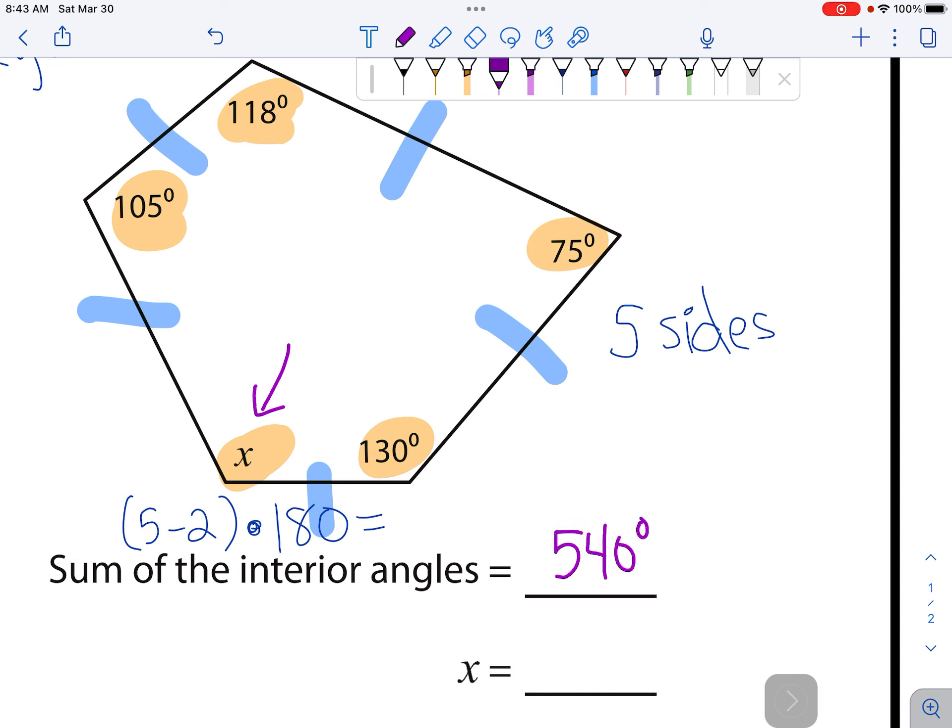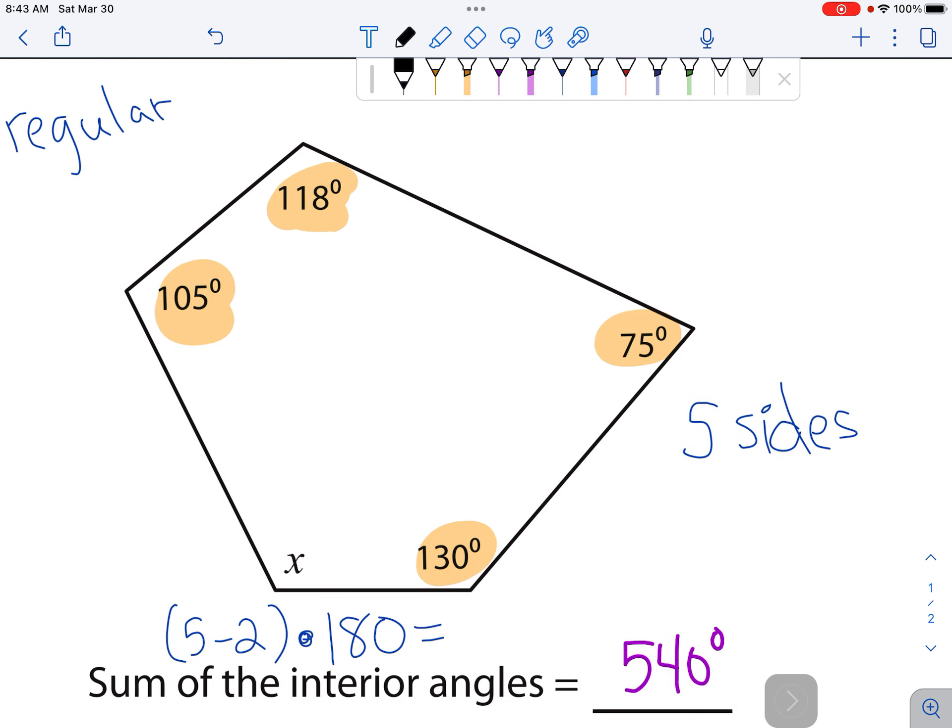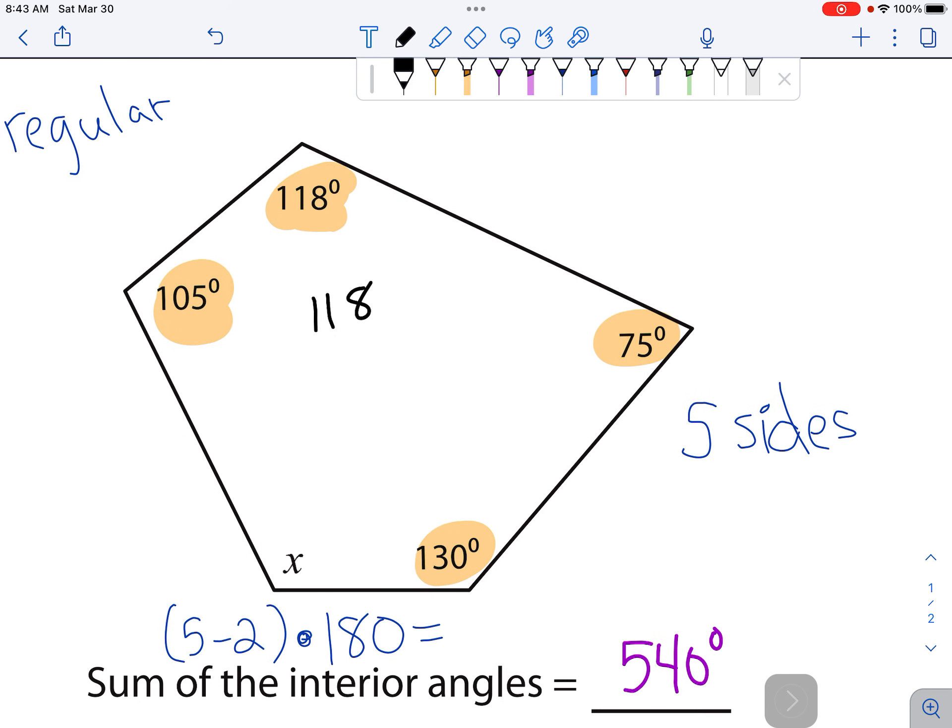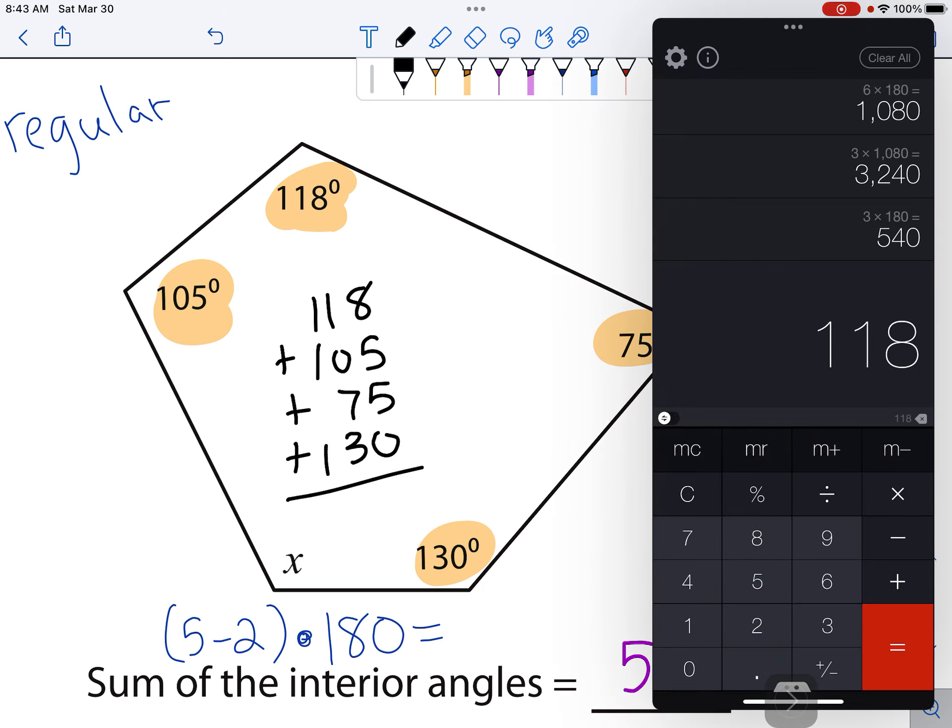But so far, we don't have 540. So far, we have these gold ones. So if we add them together, 118 plus 105 plus 75 plus 130 degrees, that will get us so far. 118 plus 105 plus 75 plus 130 equals, that gets us 428.